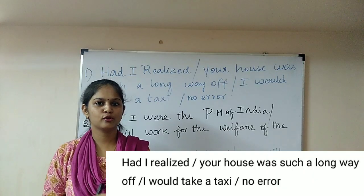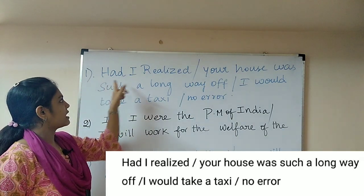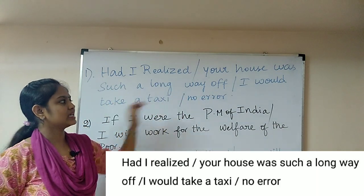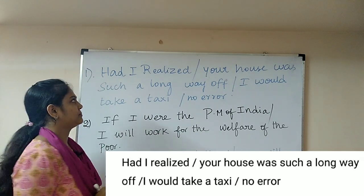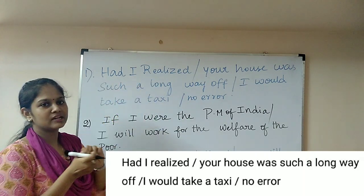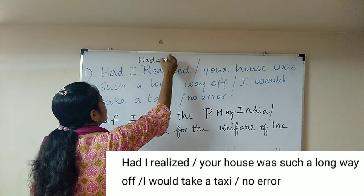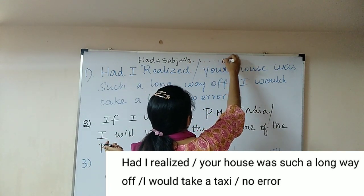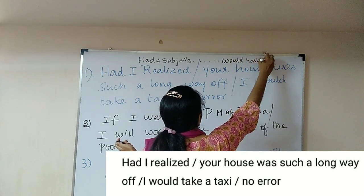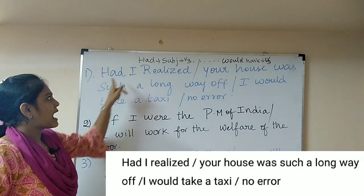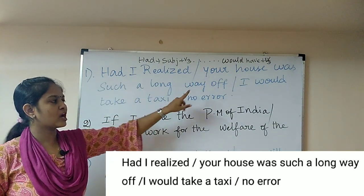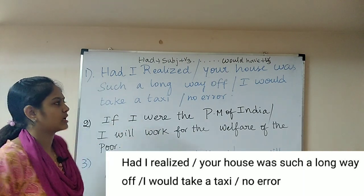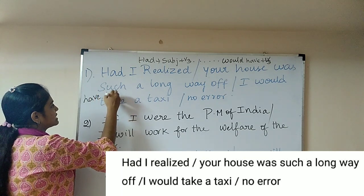Now let's try practice questions based on these rules. Question 1: 'Had I realized your house was such a long way off, I would take a taxi.' The if clause uses 'had + subject + V3' format (past perfect inversion), so the main clause must use 'would have + V3.' The error is 'would take' — it should be 'would have taken.' Question 2: 'If I were the prime minister of India, I will work for the welfare of the poor.' The if clause uses simple past ('were'), so the main clause must use 'would + V1' — 'I would work,' not 'I will work.'